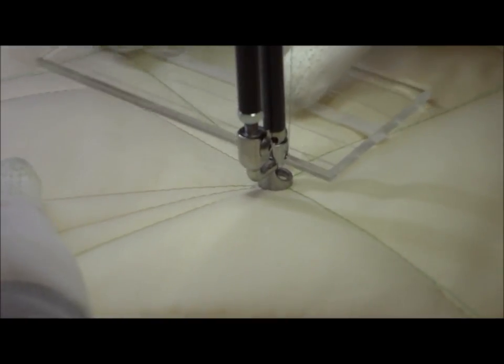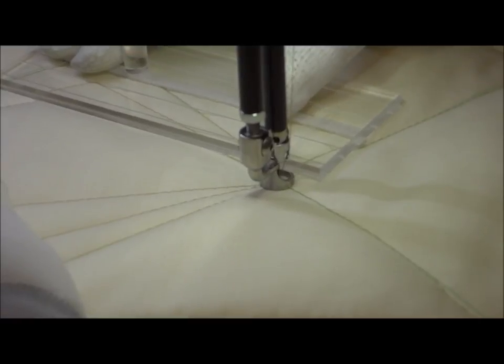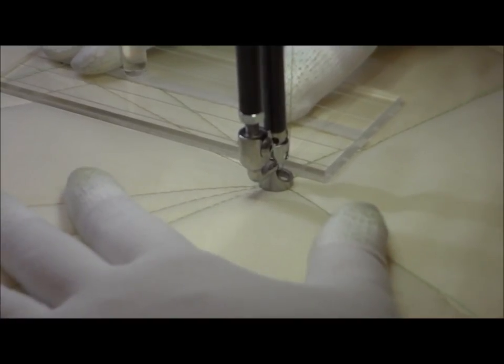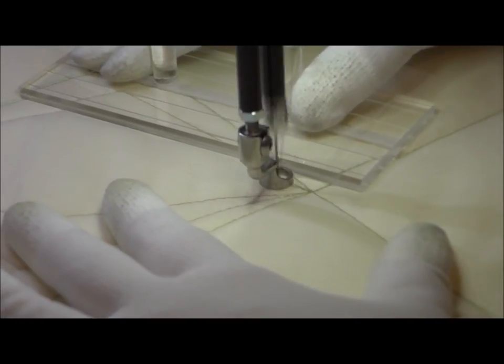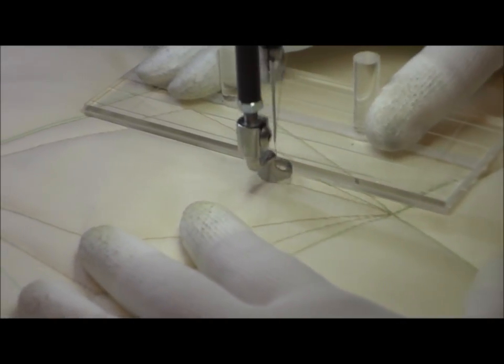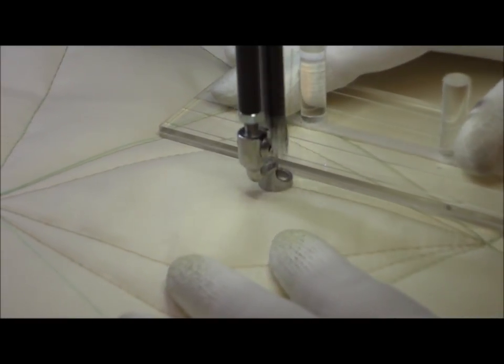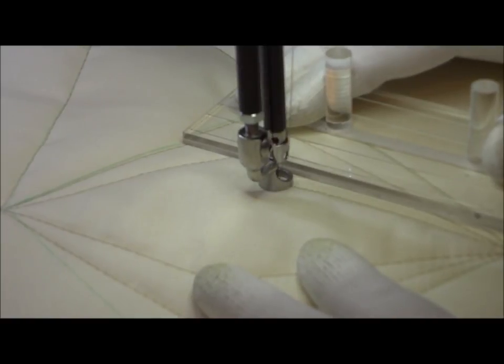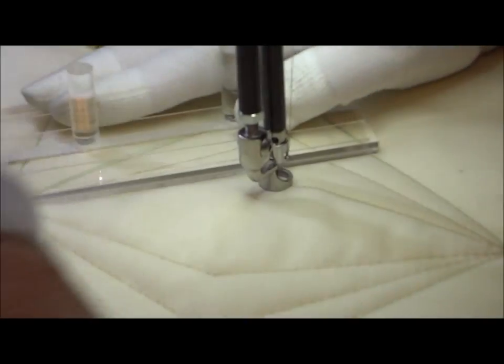One more time, we're going to place the ruler so that the inch mark on the ruler is where the last pivot point was on the side. We're going to stitch up to that. We're going to stop. We're going to pivot and back up to the top pivot point.